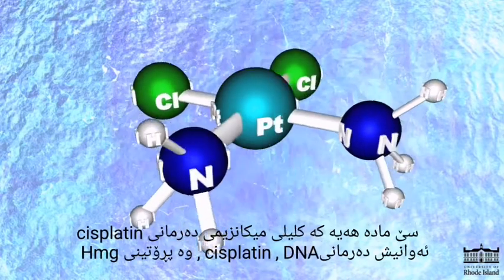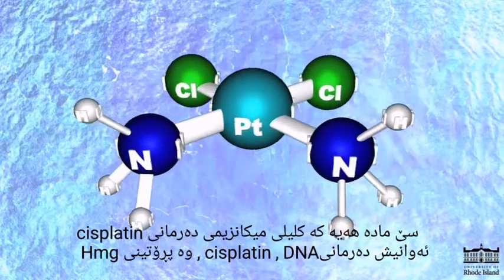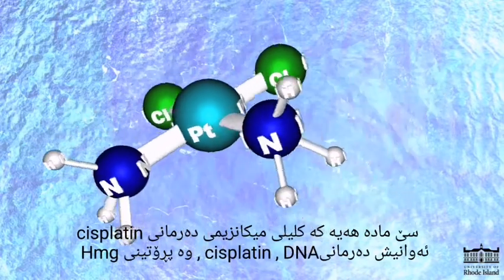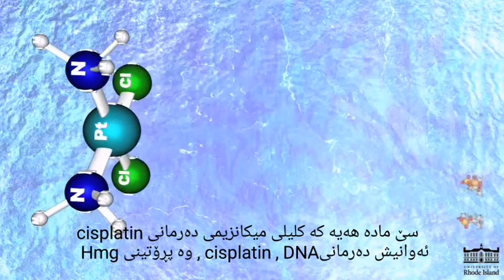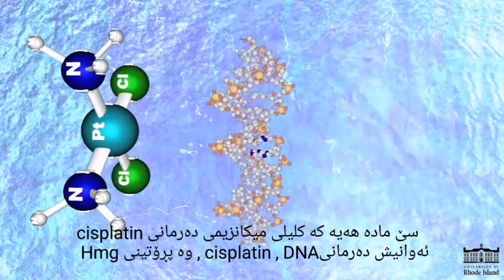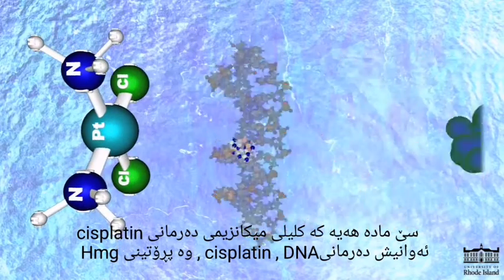There are three key components involved in cisplatin's mechanism: cisplatin, DNA, and an HMG protein.